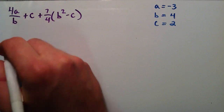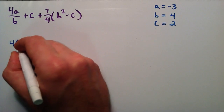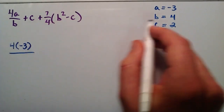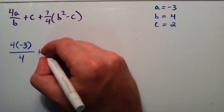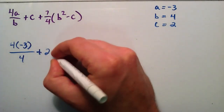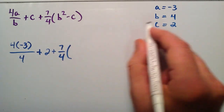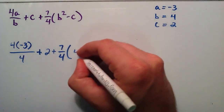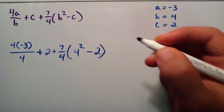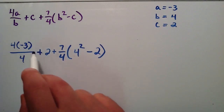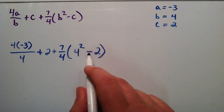So this first term is 4 times a over b — so 4 times a, where a is negative 3, and that's over b, where b is equal to 4. Then we're going to add that to c, where c is equal to 2, and then add that to 7 over 4 times the quantity of b squared minus c. So b is 4, meaning b squared is 4 squared, minus c which equals 2. We can see we've got addition, multiplication, parentheses, an exponent, and subtraction.